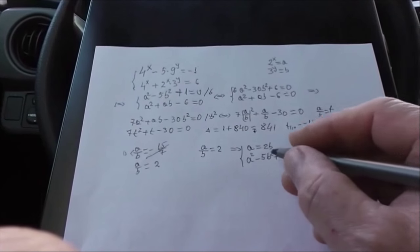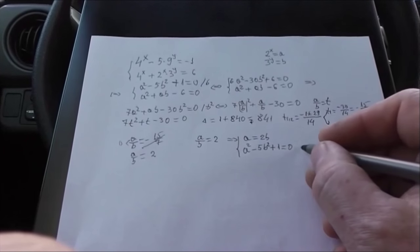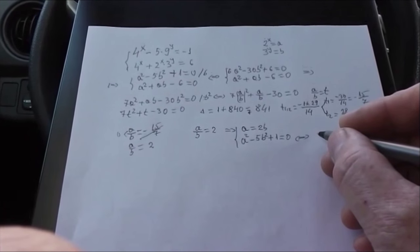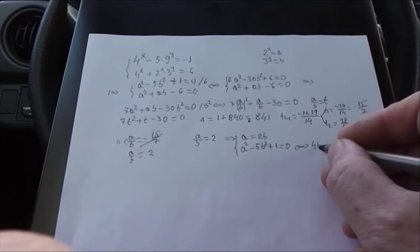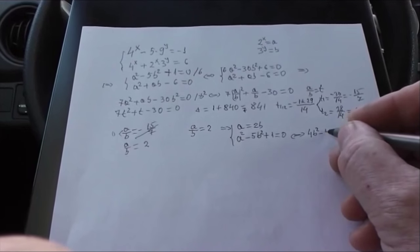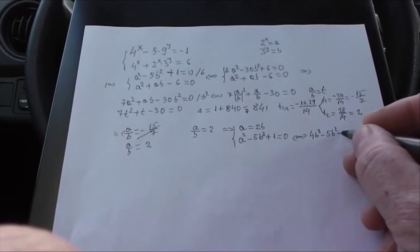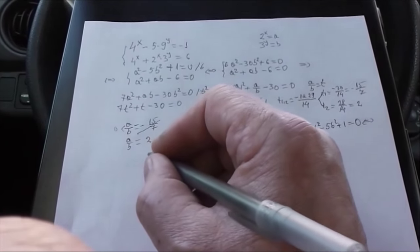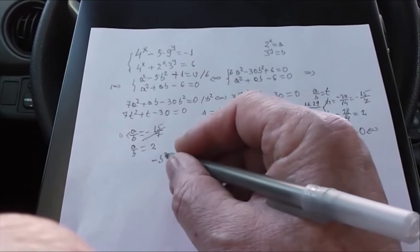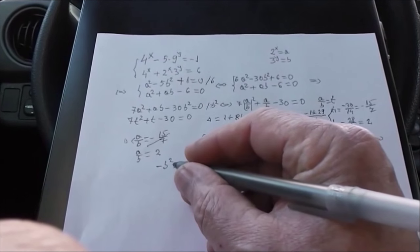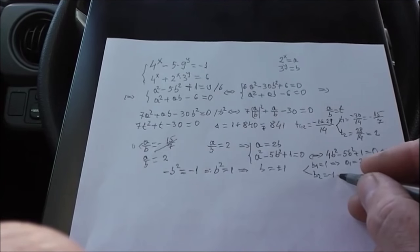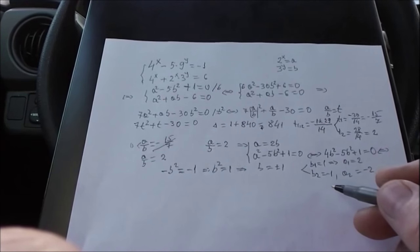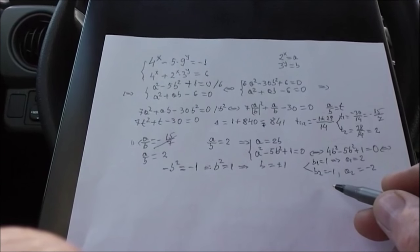A equals 2b and we add one of the equations and we'll use the first one. a² minus 5b² plus 1 equals 0. We replace a with 2b. And we have 4b² minus 5b² plus 1 equals 0. That's equivalent with negative b² equals negative 1 and b equals plus minus 1. And now b₁ equals 1 and b₂ equals negative 1. And that means a₁ equals 2 and a₂ equals negative 2.